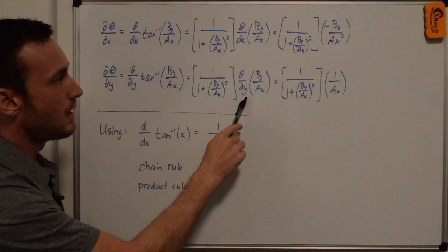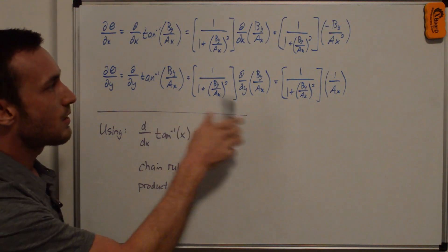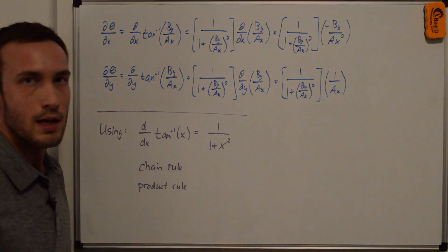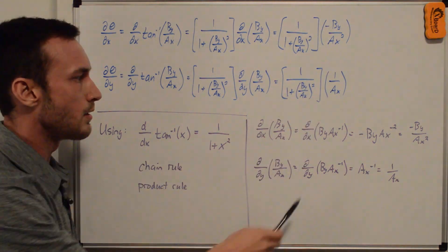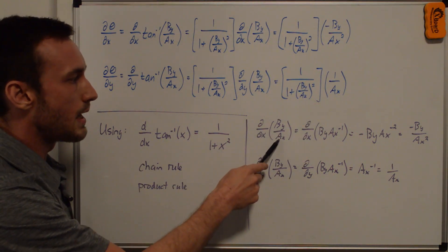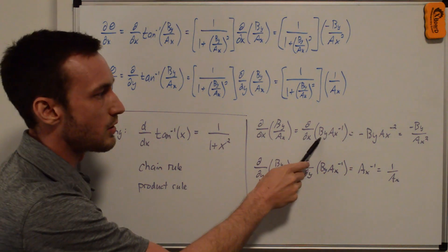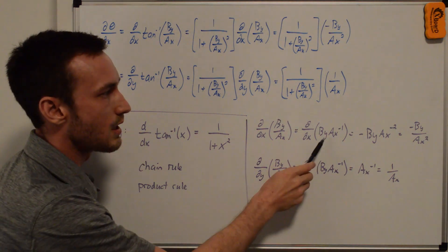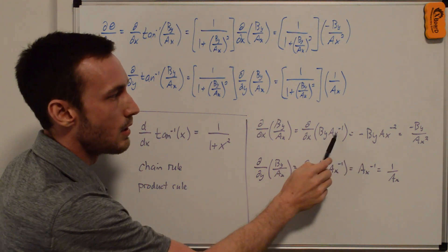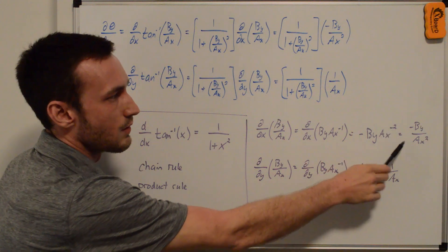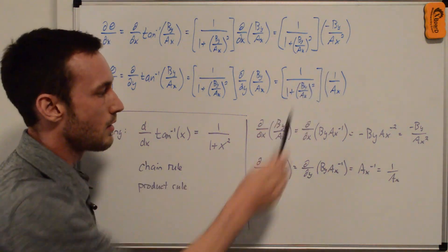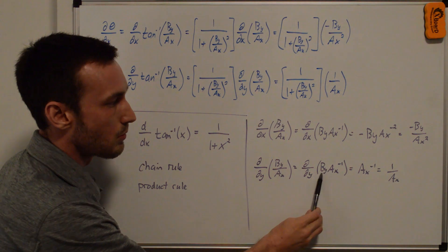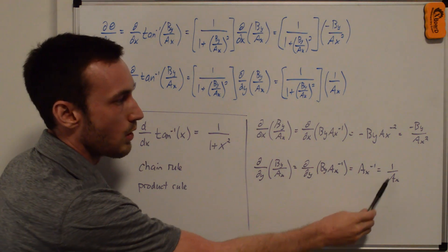For d(theta)/dy, the arctan derivative part is the same, but now we take d/dy of (b_y / a_x), which gives 1 over a_x. To clarify: for the partial with respect to x, writing b_y / a_x as b_y times a_x to the negative 1, we bring down the negative 1 to get negative b_y times a_x to the negative 2, which is negative b_y over a_x squared. For the partial with respect to y, since b_y is a function of y, we just get a_x to the negative 1, which is 1 over a_x.